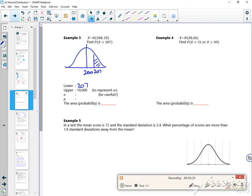So my lower is going to be 207, my upper is going to be 10,000 to represent infinity. Be careful with this because sigma squared is 25, so sigma must be 5, and mu is 200.